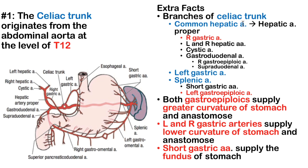The three major branches are the common hepatic artery, going over towards the left. That's the only one on this diagram that's not labeled. Going from the celiac trunk to the left, we have the common hepatic artery, and then there are some hepatic branches we'll talk about in a minute.